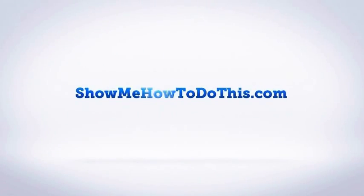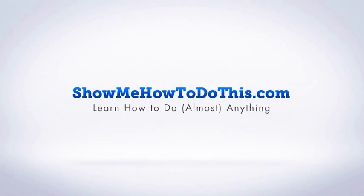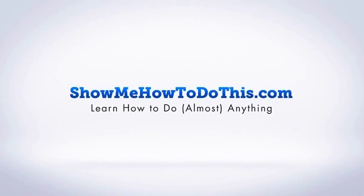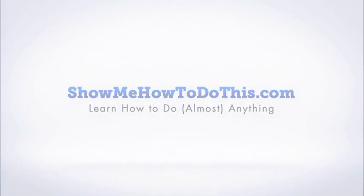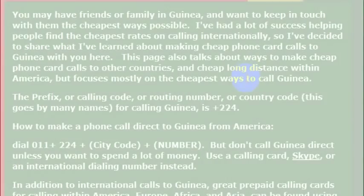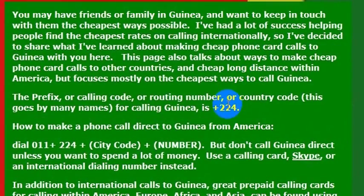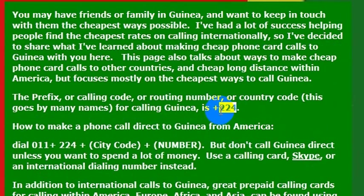If you have friends or family in Guinea, you'll want to be able to make a phone call to them. In order to do that, you need to know the international dialing code for the country. The international dialing code for Guinea is 224.